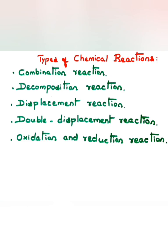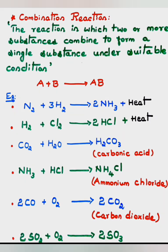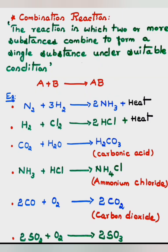The first type is combination reaction. A reaction in which two or more substances combine to form a single substance under suitable conditions is called a combination reaction. Here, substances A and B combine to form a single substance. Let's look at a few examples.